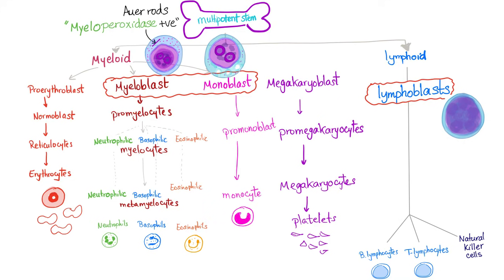Describing the myeloblast: it's large, immature, with more cytoplasm than the lymphoblast. The nucleoli are more prominent, it's granular, and it has more granules than the monoblast and the lymphoblast — lymphoblasts have no granules whatsoever. Myeloblasts also have Auer rods, which are azurophilic needle-shaped granules. Monoblasts, on the other hand, are granular but have fewer granules, and the cytoplasm is sometimes vacuolated with prominent nucleoli.